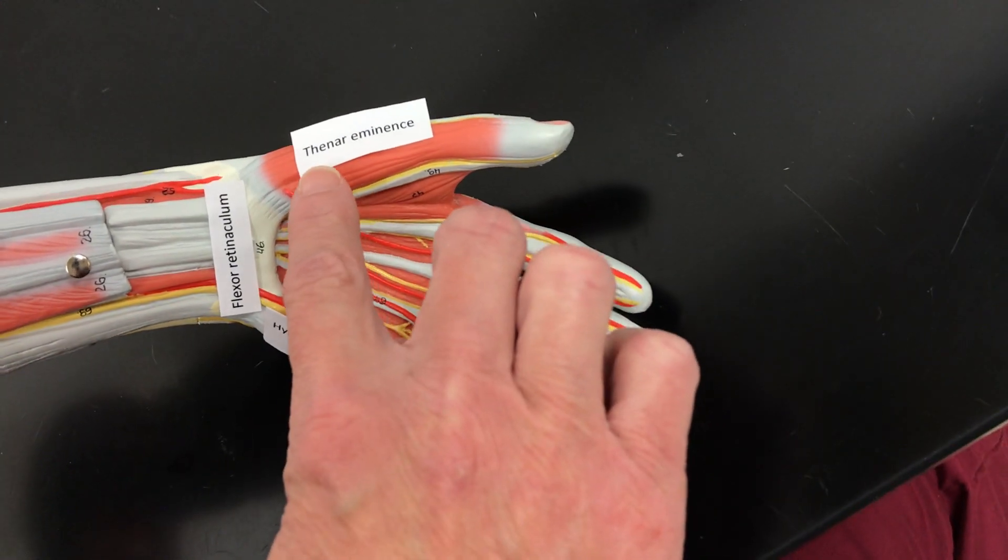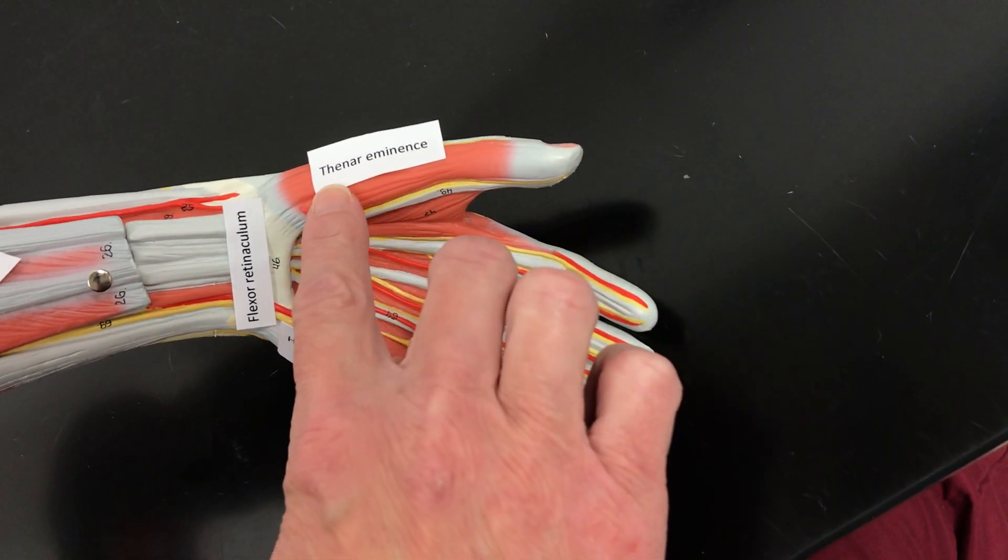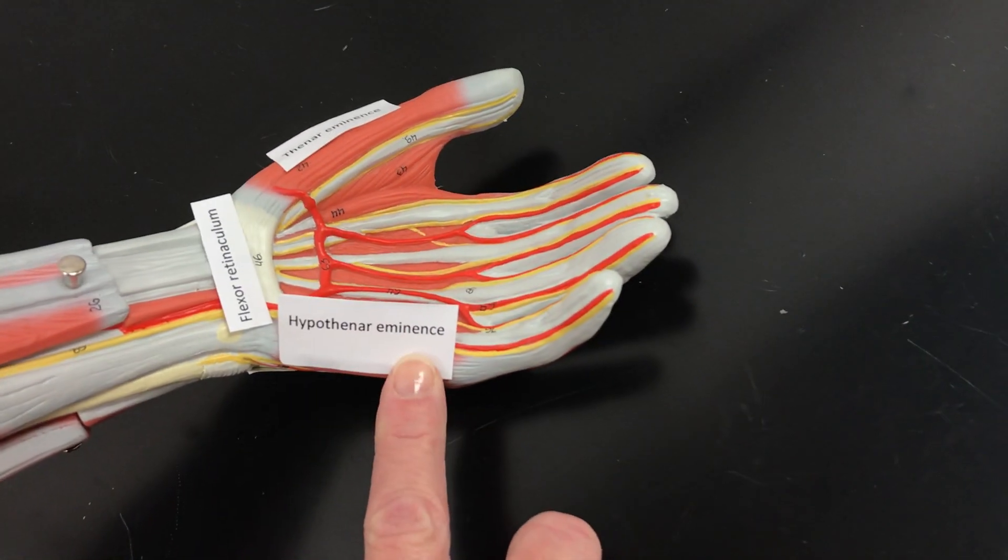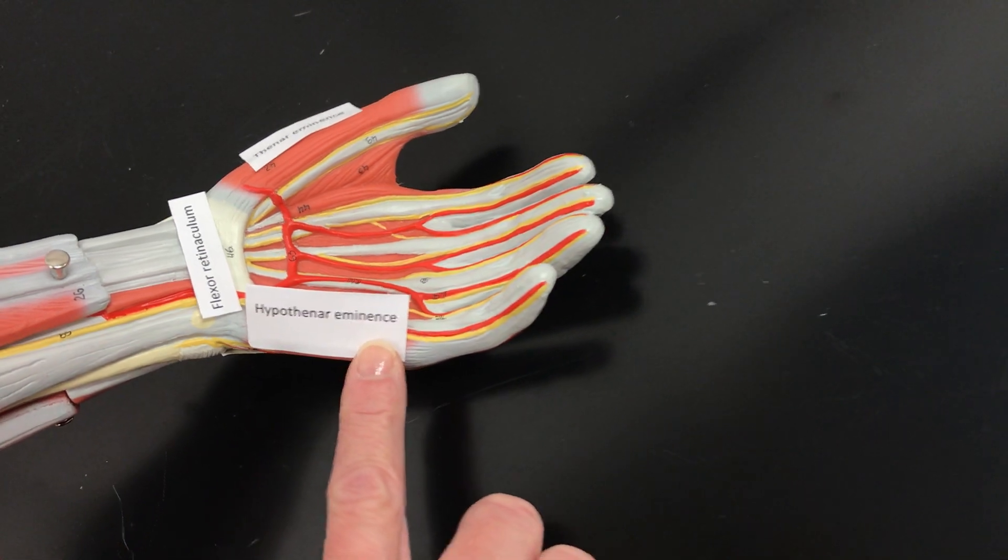Then we have some muscles called the thenar eminence, the thenar are on the thumb side. And then we have the hypothenar eminence, those are on the pinky side of the hand.